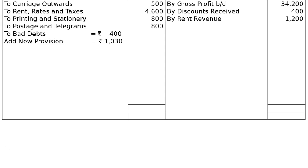Next, bad debts rupees 400, then add new provision for bad debts rupees 1,030, and deduct less old provision rupees 800. The bad debt provision is estimated at 5% on debtors. On debtors of rupees 20,600, the new provision works out to rupees 1,030.